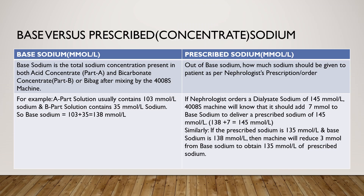Prescribed sodium is the amount of sodium to be given to a patient as per the nephrologist's prescription or order. For example, if a nephrologist orders a dialysate sodium of 145 millimole per liter, then the 4008S machine will know it should add 7 millimole to base sodium to deliver a prescribed sodium of 145 millimole per liter. Similarly, if the prescribed sodium is 135 millimole per liter and the base sodium is 138 millimole per liter, the machine will reduce 3 millimole from base sodium to obtain 135 millimole per liter of prescribed sodium for the patient.